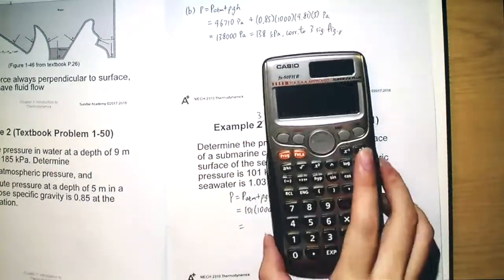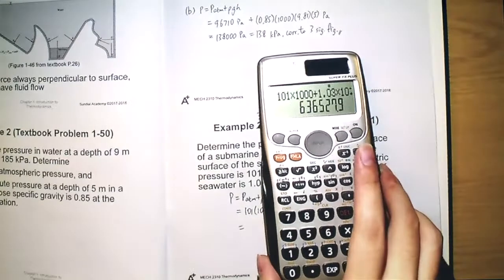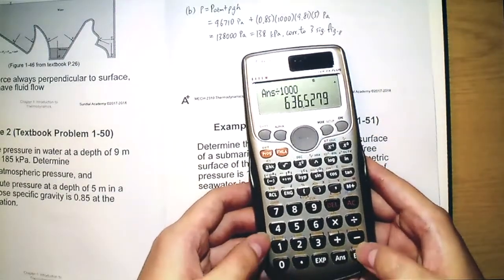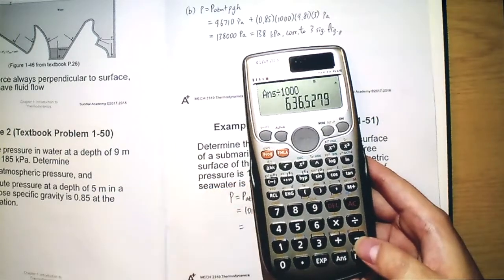Okay, as you can see that, we get this value. And in order to change it to kilopascal, we can divide it by 1000. And you will get this value.